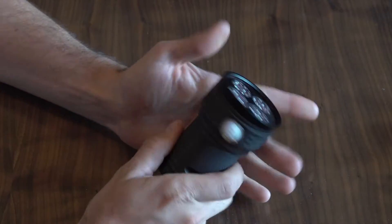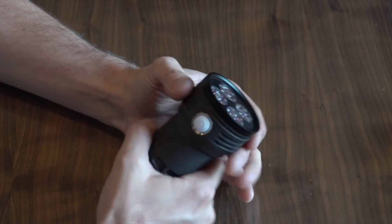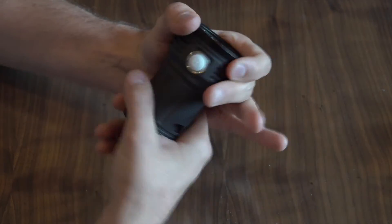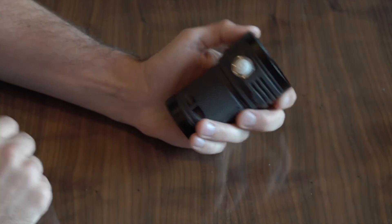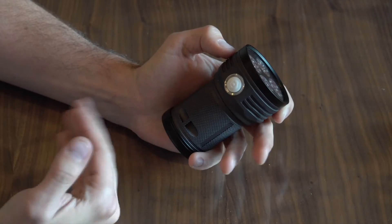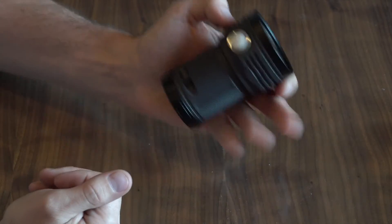The first would be a mechanical lockout. In that case you can simply unscrew the head about half a turn to a turn and it will mechanically lock out the electrical connection to the batteries.